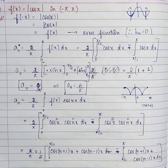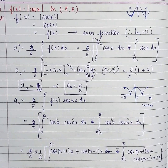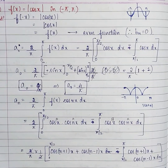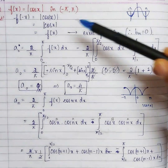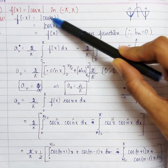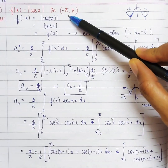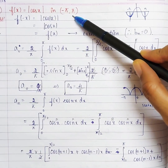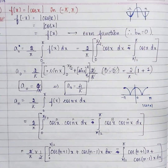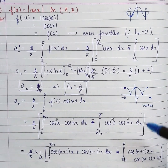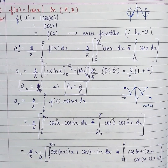In this video, we are going to express the function f(x) = |cos x| on the interval -π to π as a Fourier series. Let's look at what makes this problem special.